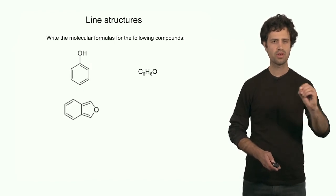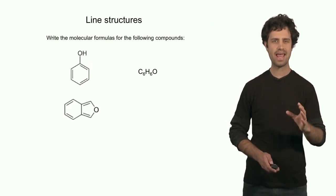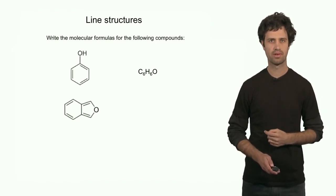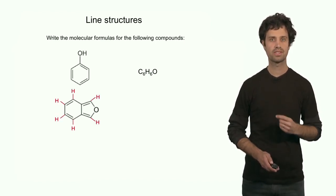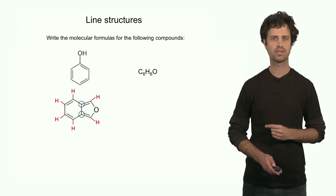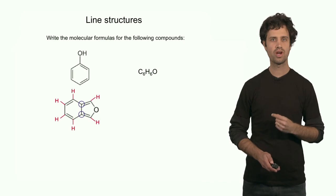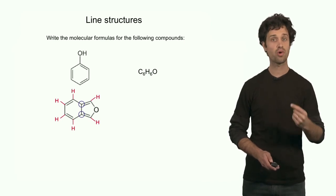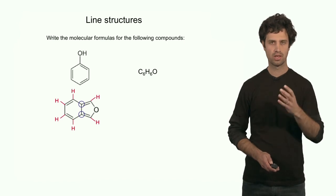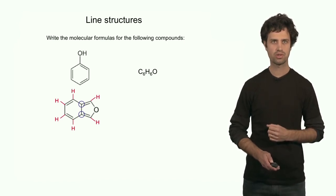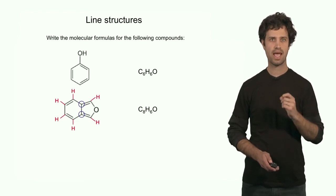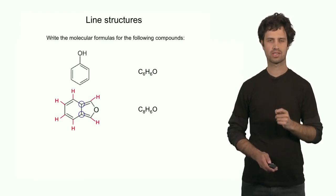The second structure, if you count the number of corner points, has eight carbon atoms. It has a total of six hydrogen atoms. Note that two of those corner-point carbons do not have a hydrogen attached because they already have four bonds. The structure also has an oxygen, giving the molecular formula C8H6O2.